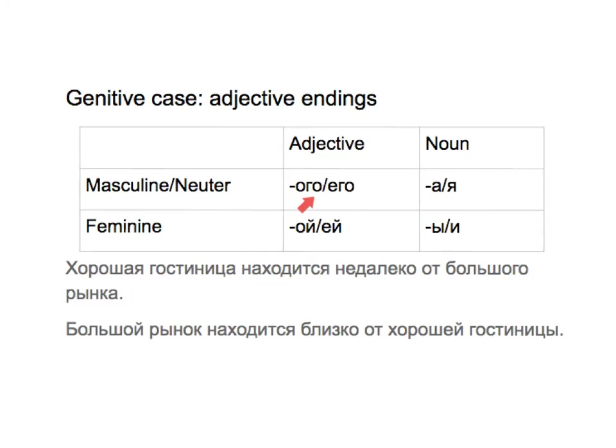Note that the Г here is pronounced as В. We've seen this before, like with ЕВО. We already knew that feminine nouns in genitive case end in И and И. Their adjective endings are ОЙ and ЕЙ.